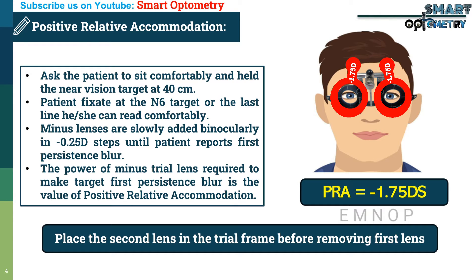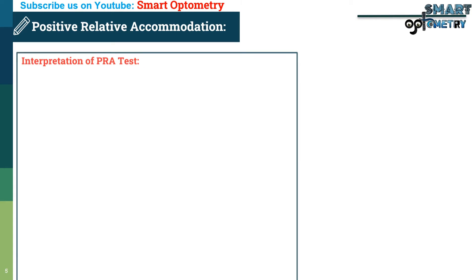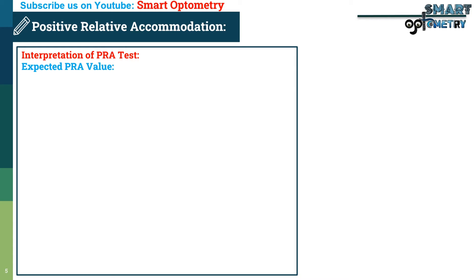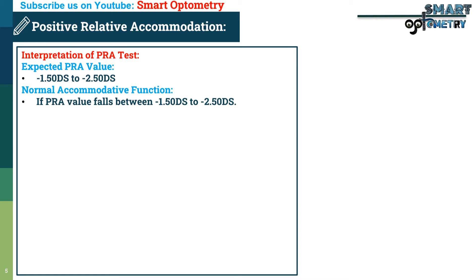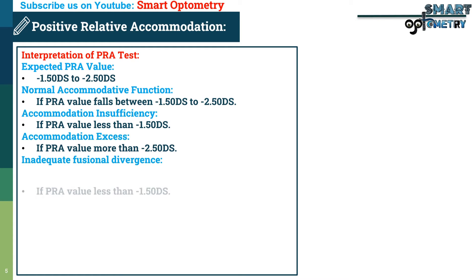So 1.75 dioptre is the positive relative accommodation value. Regarding interpretation: the expected positive relative accommodation value is between minus 1.5 and minus 2.5 dioptres — this indicates normal accommodative function. If PRA is less than minus 1.5 dioptres, it indicates accommodation insufficiency. If PRA is more than minus 2.5 dioptres, it indicates accommodation excess or inadequate fusional divergence.